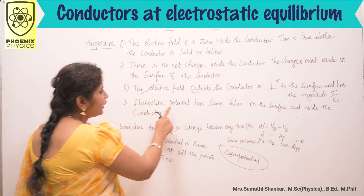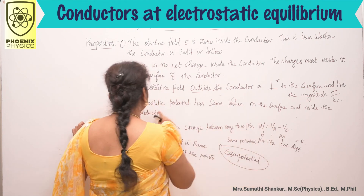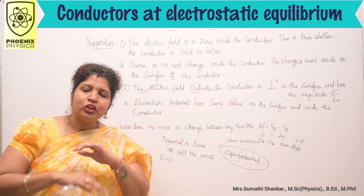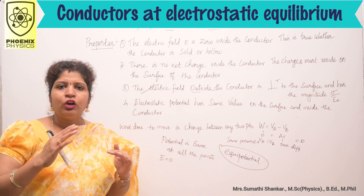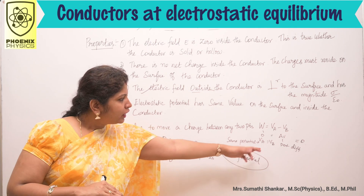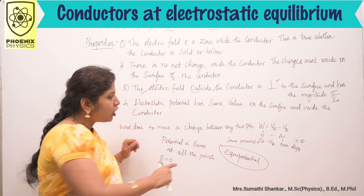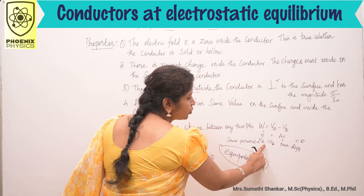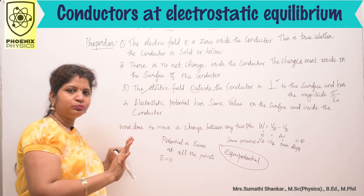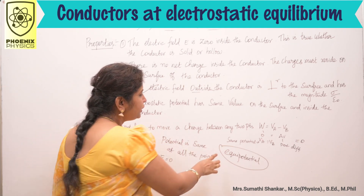Fourth: electrostatic potential has the same value on the surface and inside the conductor. If the potential is the same at all points, the work done W = 0, because the potential difference is 0 — all points are at equal potential, so VA = VB. At electrostatic equilibrium, the conductor is at equipotential.